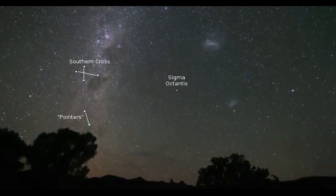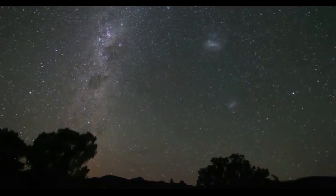There is a star named Sigma Octantis, very near the Southern Celestial Pole, but is not a very bright star, so it is difficult to see.